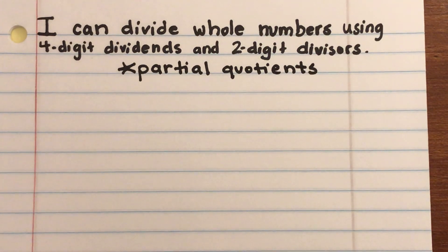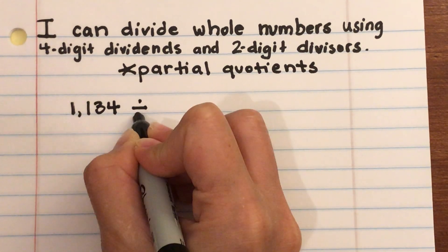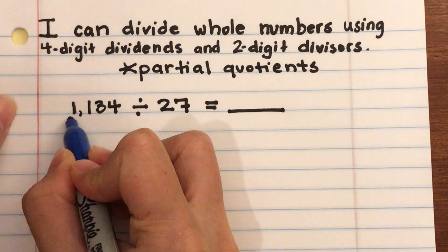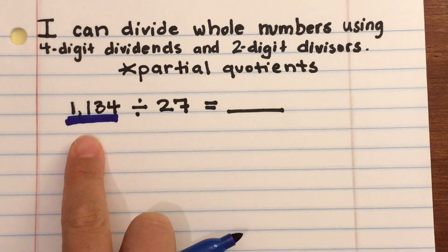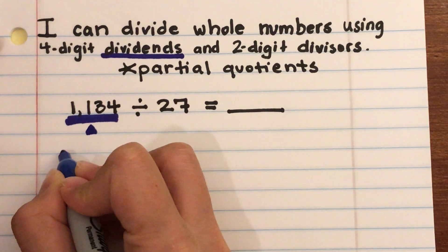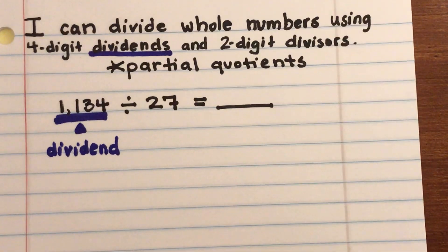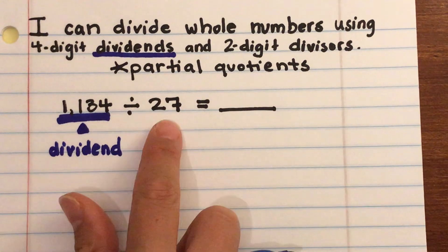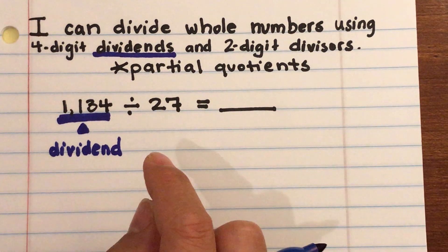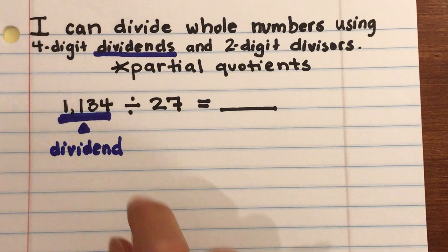Let's start with some vocabulary. If we have 1,134 divided by 27, the first number — regardless of whether it's smaller or larger — is always going to be the dividend. Typically in elementary school the first number will be larger, but that's not always true. For example, 1 divided by 2 equals 0.5, so you can't make a rule that the first number always has to be larger.